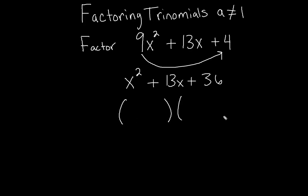So if we set up our two binomials like this, x is going to go on the front. That's how we get our x squared. By having x times x, we get x squared.